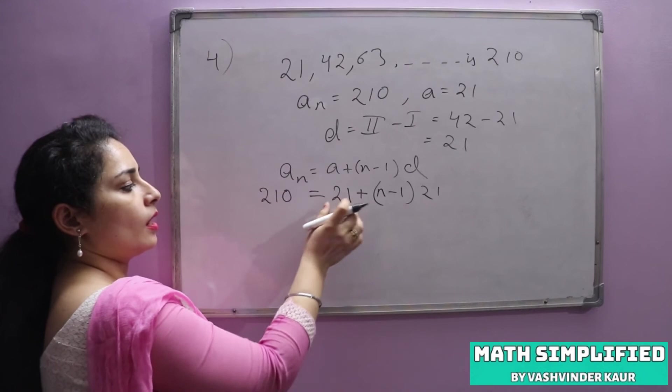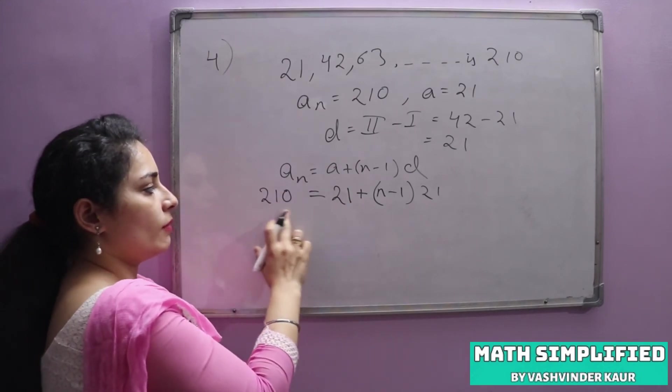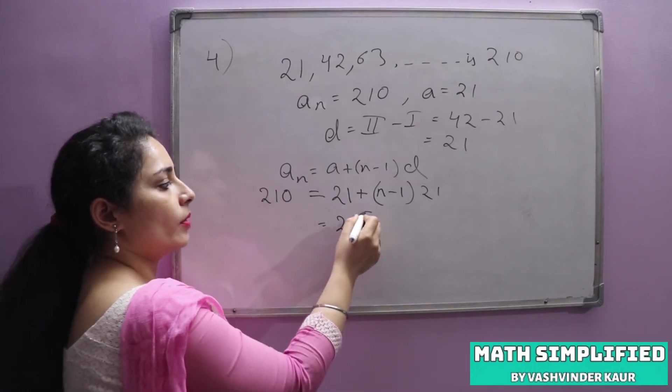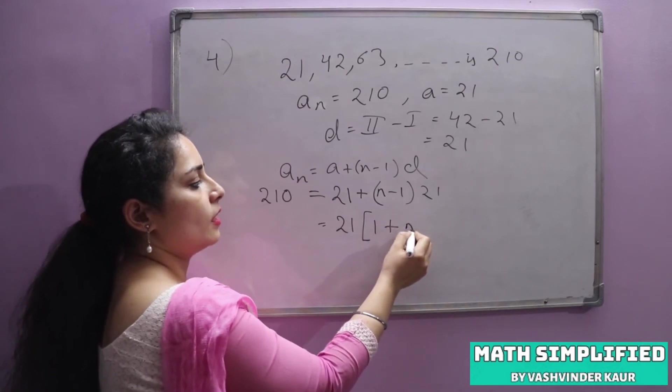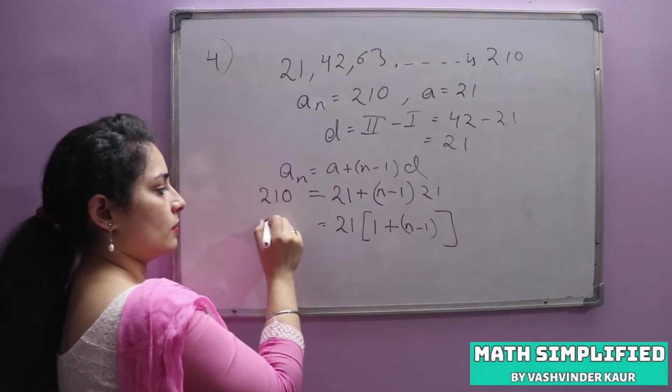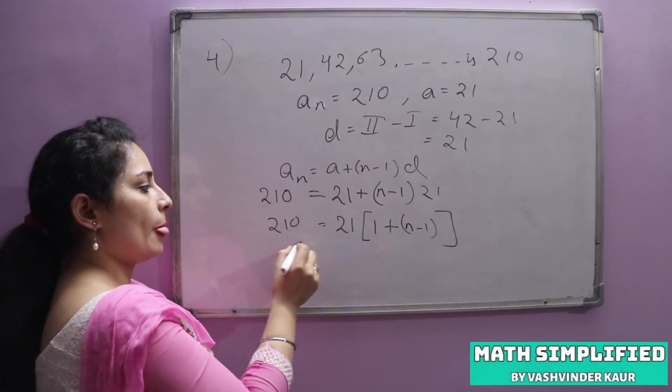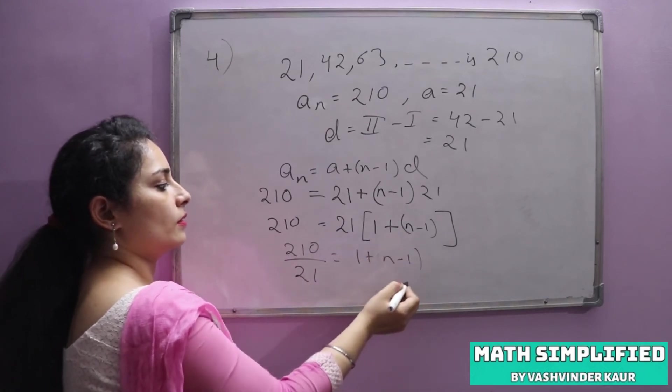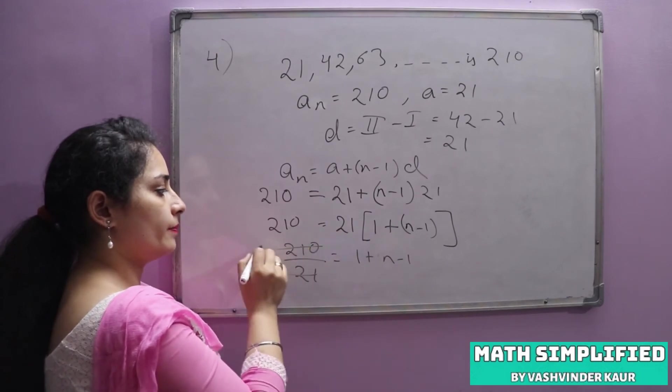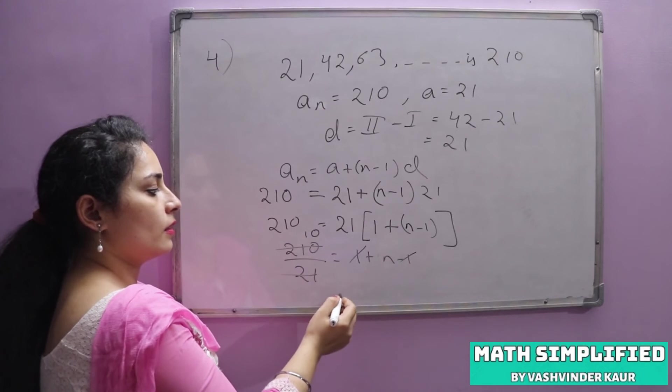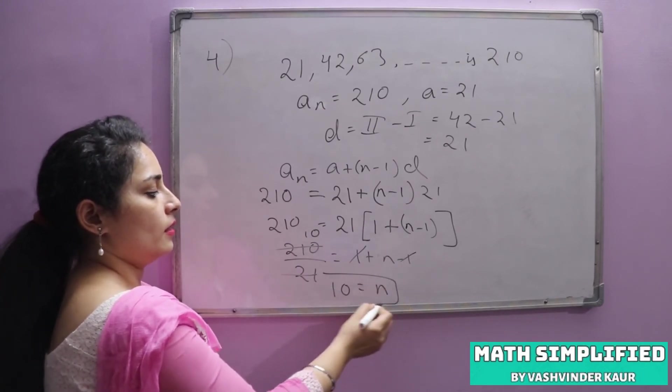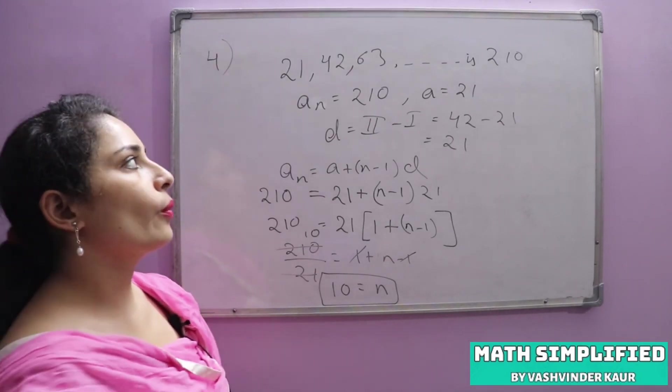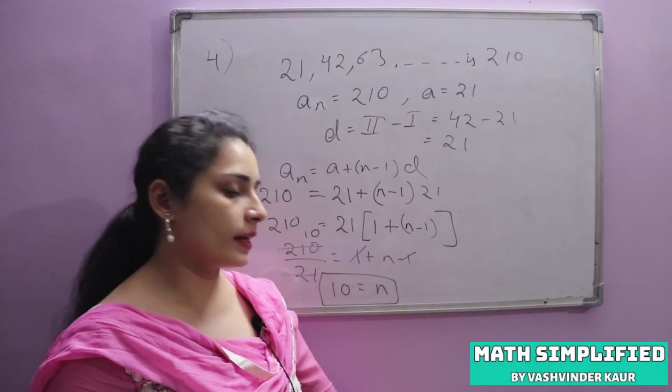Then an formula, a plus n minus 1d. 210 equals 21 plus n minus 1 times 21. Take 21 common. 21 times 1 plus n minus 1. Divide by 21, we get 10 equals 1 plus n minus 1, so n equals 10. So we can say 210 is the 10th term of this given AP.